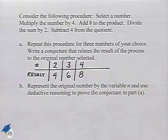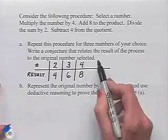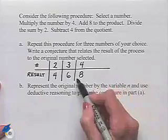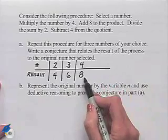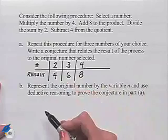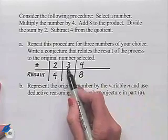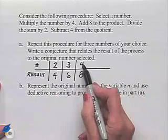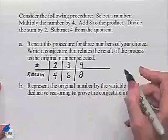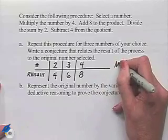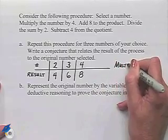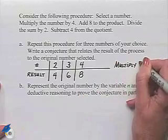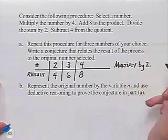Now we want to try to come up with a conjecture that tells us something about the result of the process, that is, these numbers on the bottom row, compared to the original number. When we started with 2, we got 4. Started with 3, we got 6. Started with 4, we got 8. What we notice is that in each case, we end up multiplying the original result by 2. Or we could say we doubled the original number.